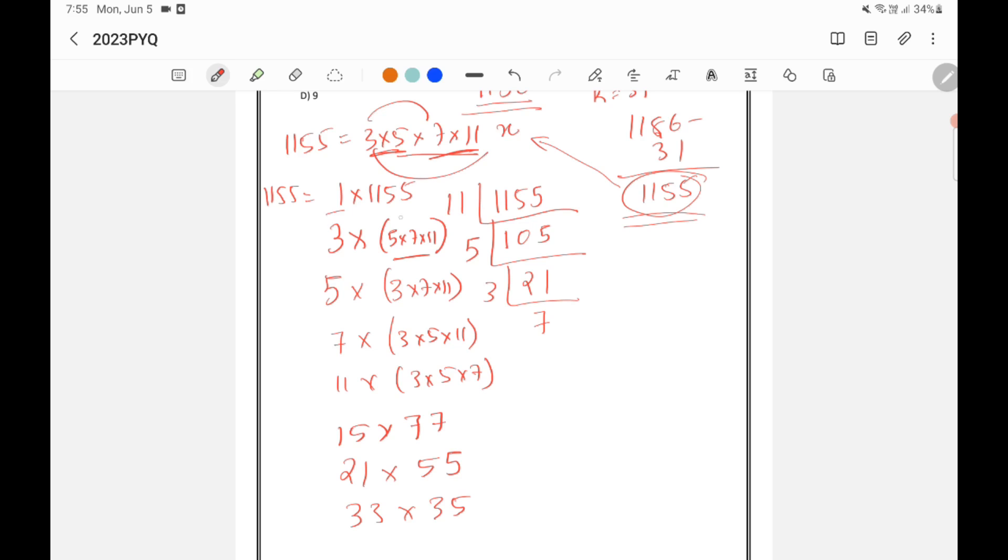1 is a factor, 1155 is a factor, 3 is a factor, 5 is a factor, 7 is a factor. 5 into 7 into 11, whatever number that we get after doing that calculation it will be a factor. 3 into 7 into 11, the number we get will be a factor. So these are all factors of 1155. If we divide 1155 by any of these numbers we will get remainder as 0, which is exactly divisible.